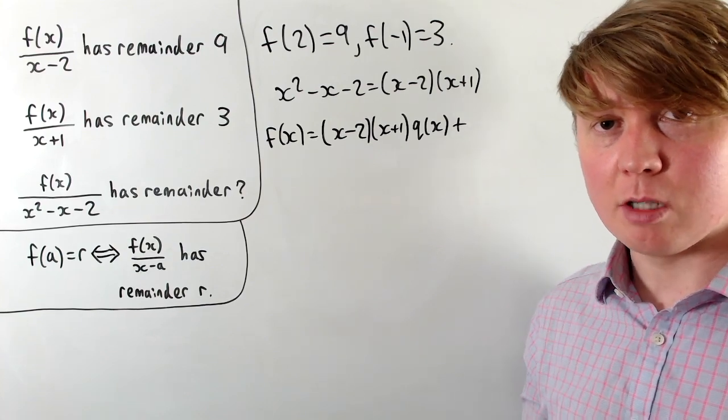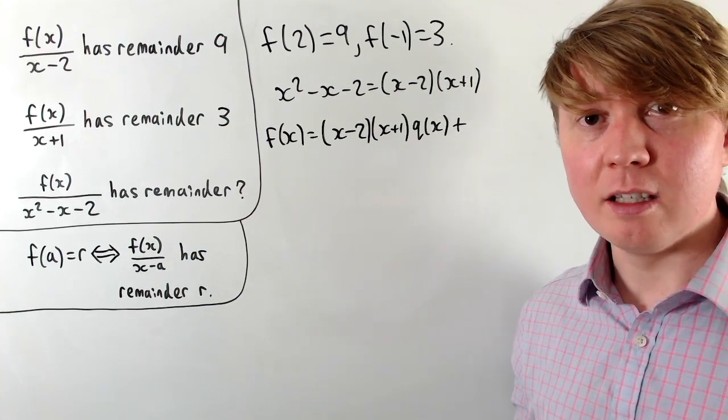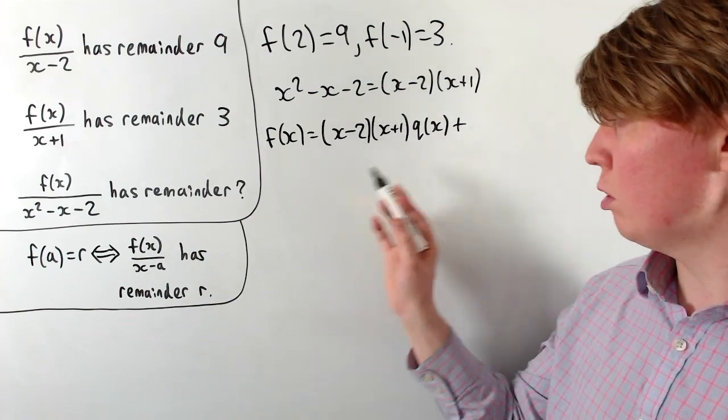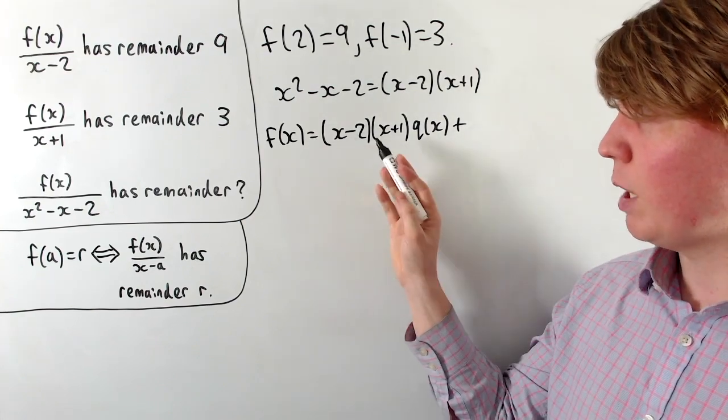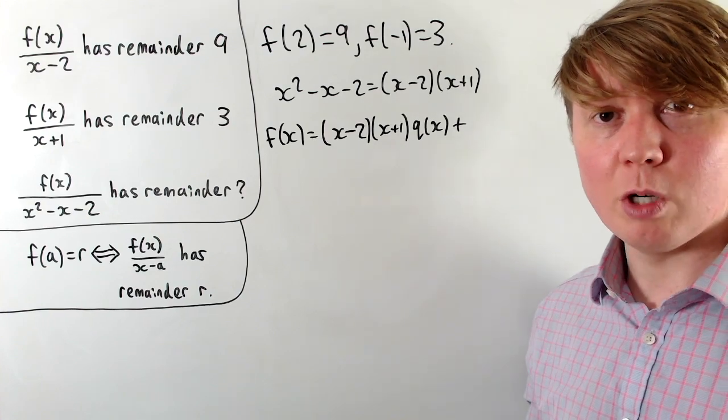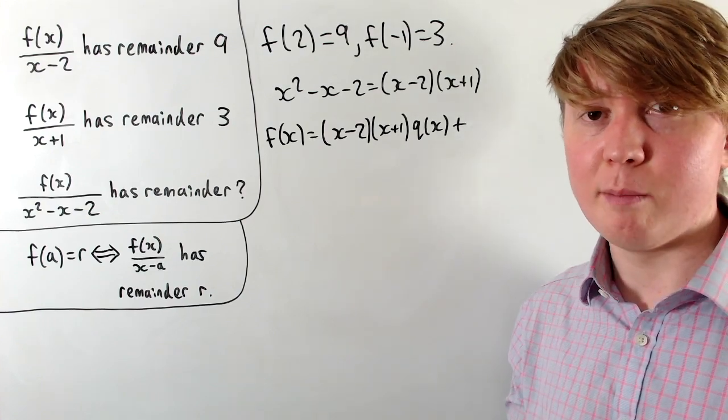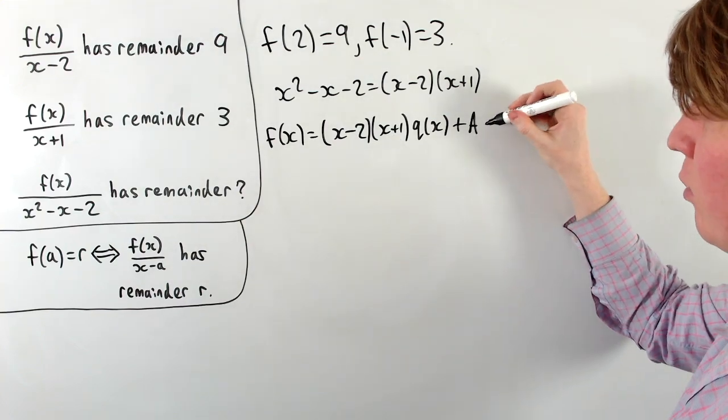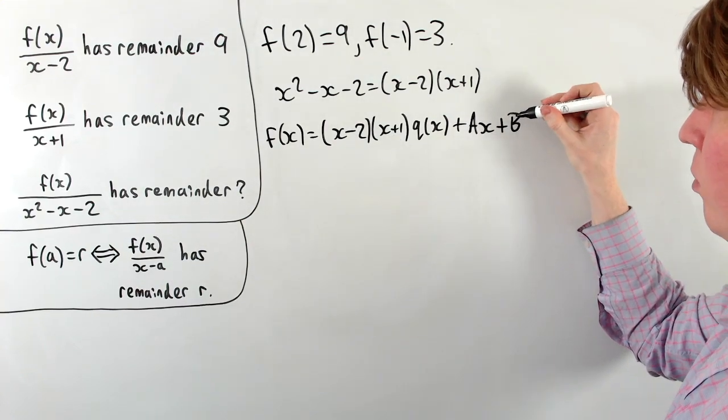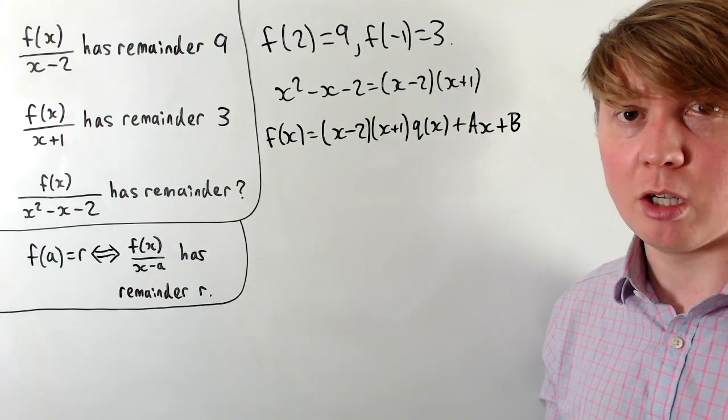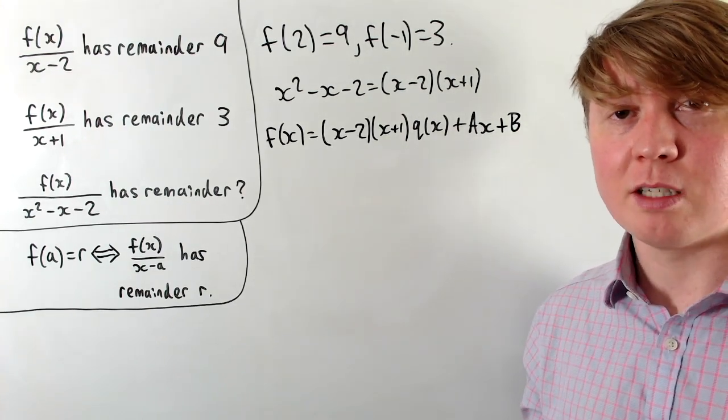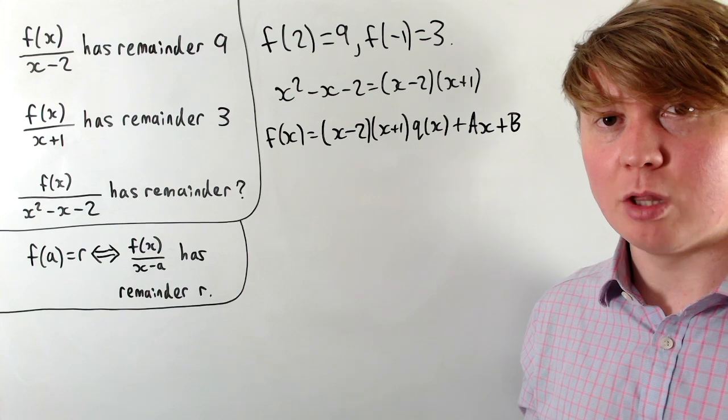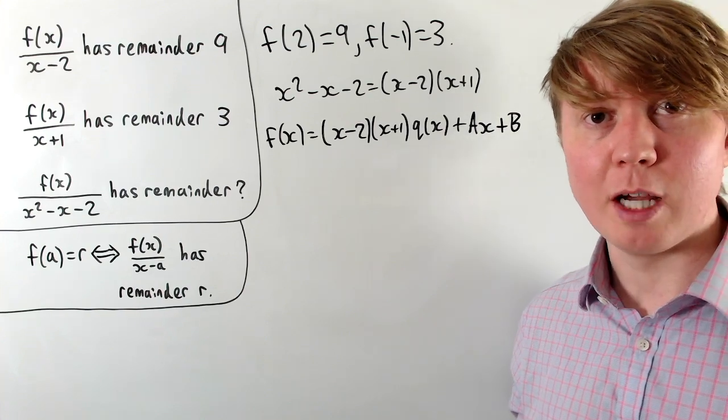But the problem now is our remainder isn't just a constant, it could actually be a linear function. We could choose q(x) to get all of our powers of x coefficients all the way down to x squared, we can make them match up. But because this is being multiplied by a quadratic, we'll still have potentially some ax plus b, so x to the power of 1 and a constant term, which don't necessarily match up. So this is our idea of what the remainder means when you divide by a quadratic.